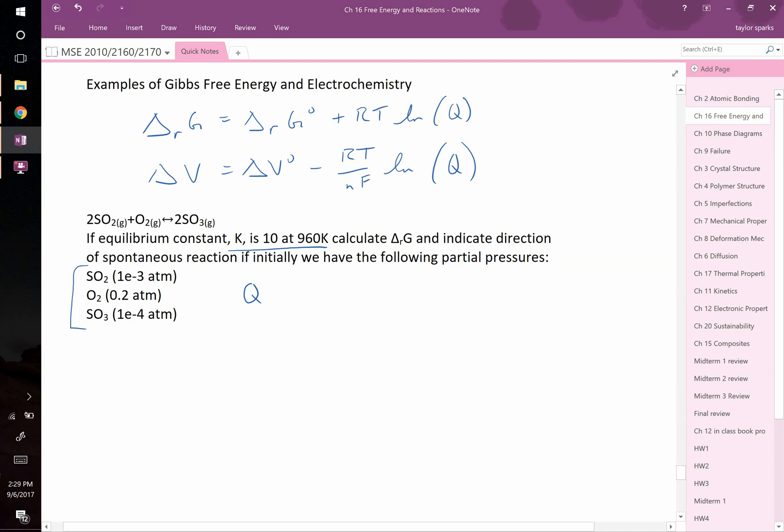So, with these three values for partial pressures, we would be able to calculate Q. Q is equal to products over reactants. If you have gaseous species, you use the partial pressure. If you have solids and liquids, you use activities. Or in this class, we simply substitute 1 for them as an approximation.